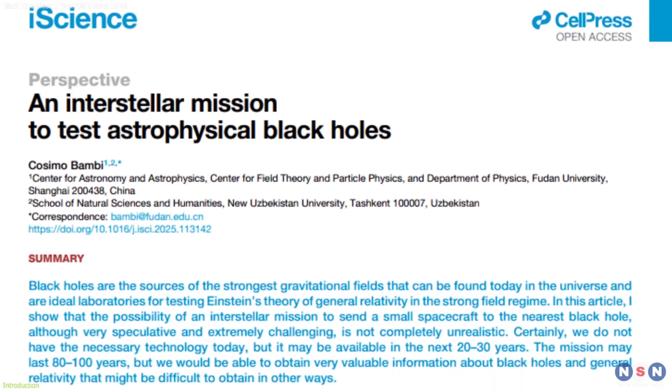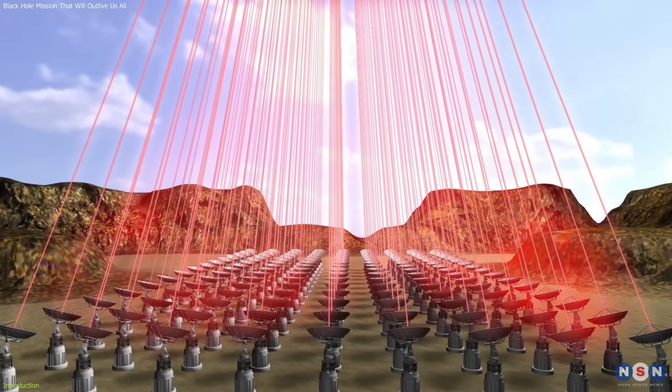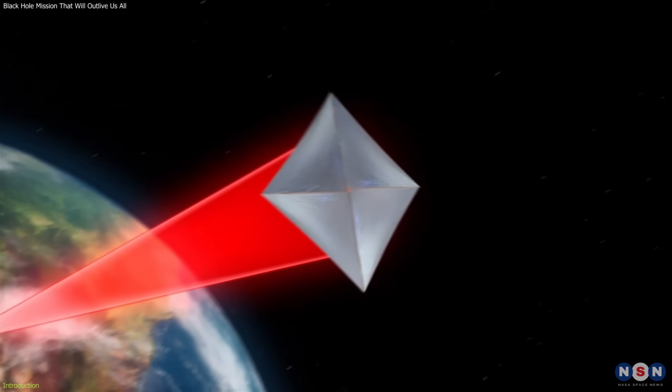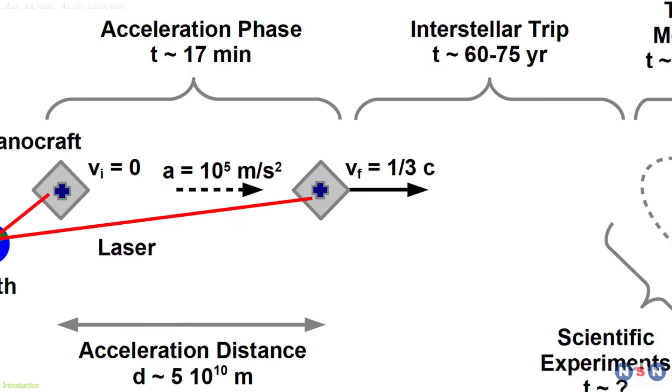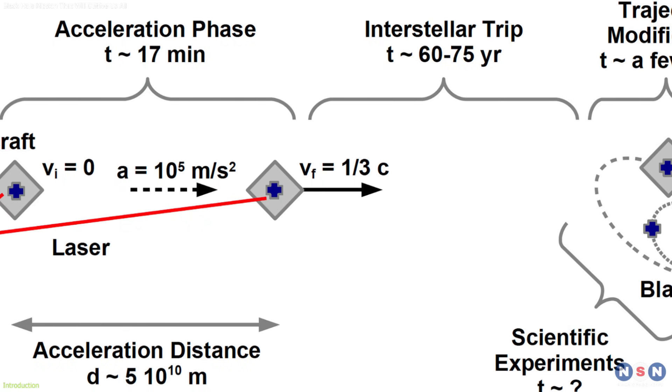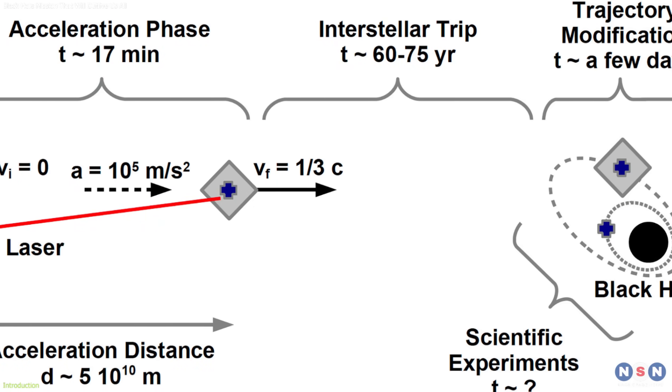Led by astrophysicist Cosimo Bambi, this plan uses powerful earth-based lasers to launch a nanocraft to one-third the speed of light. If a black hole is within 20-25 light years, the probe could reach it in 70 years, with data taking another 20 years to get back.